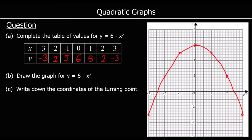Join the points up with a smooth curve. The coordinates of the turning point — where it stops going up and starts going down — are at (0, 6).